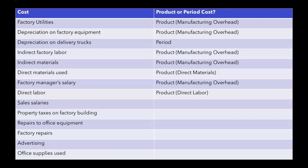Now sales salaries — salespeople are in an office, not in the factory itself. Since they are outside of the factory and outside of the manufacturing process, that is a period cost. Property taxes on the factory building — the key word here is 'factory.' If this were not on the factory, it would be a period cost. But since it's on the factory itself, it's a product cost. For example, property taxes on a store would be a period cost because that's not part of the manufacturing process.